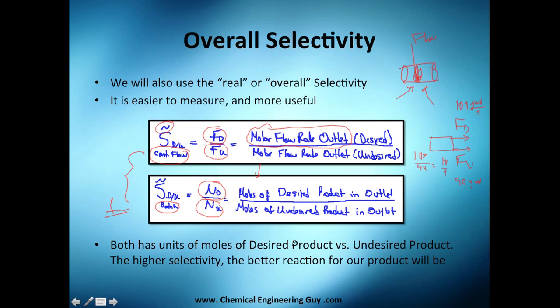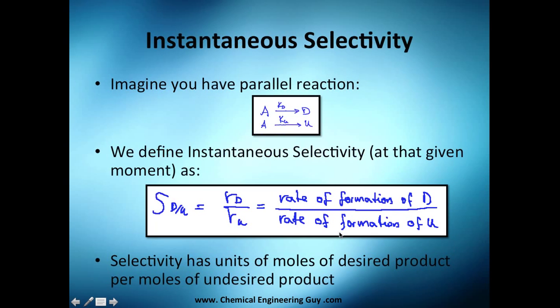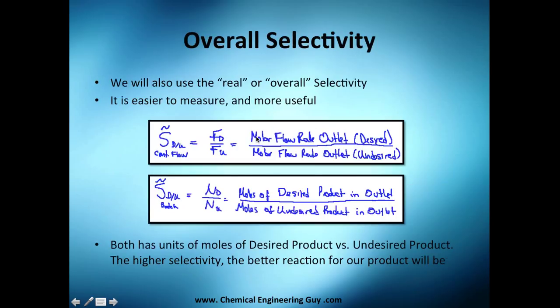Both have units of desired product versus undesired product, but the only thing is that this is instantaneous at that moment, and the overall is at the end of the process. The higher the selectivity, of course, you're having a better reaction for your product. If you have high selectivity, either overall or instantaneous, you're going to have high product concentration.